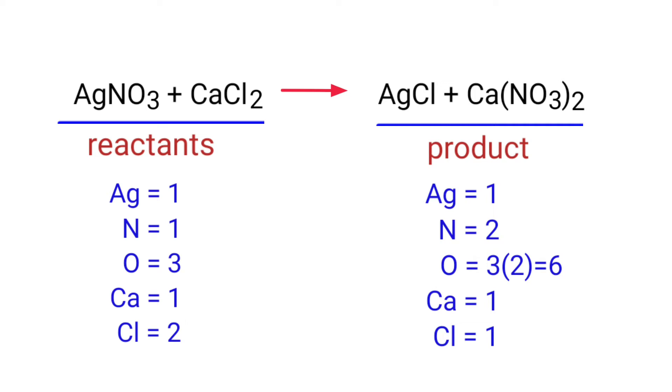And on the products side there are one silver atom, two nitrogen atoms, six oxygen atoms, one calcium atom, and one chlorine atom. The number of atoms are not balanced on both sides.